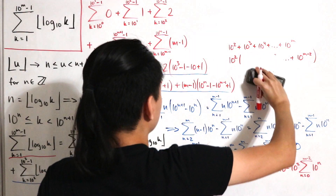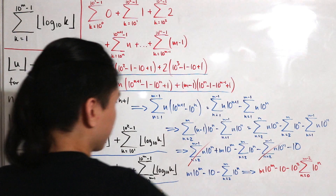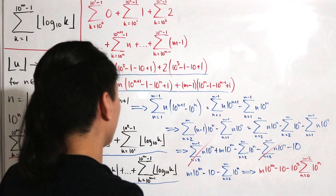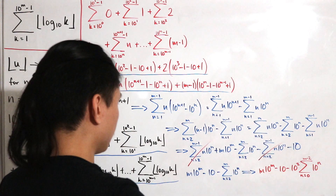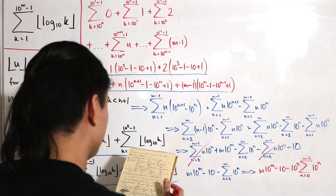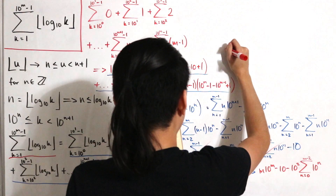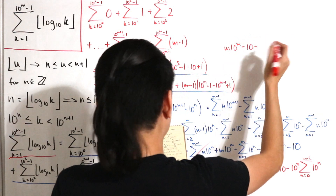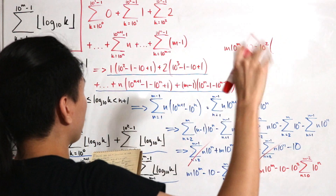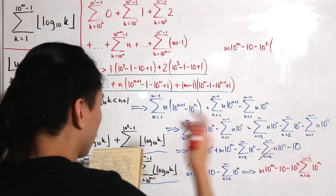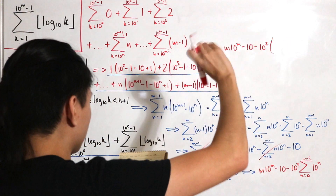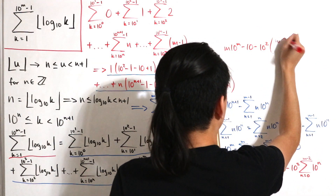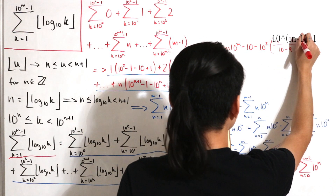Since this is a partial geometric sum (not an infinite one), we don't need to worry about convergence. Applying the geometric series formula, the sum from k=0 to m−2 of 10^k equals (10^(m−1) − 1) / (10 − 1) = (10^(m−1) − 1) / 9. So the geometric part becomes 10^2 × (10^(m−1) − 1) / 9.